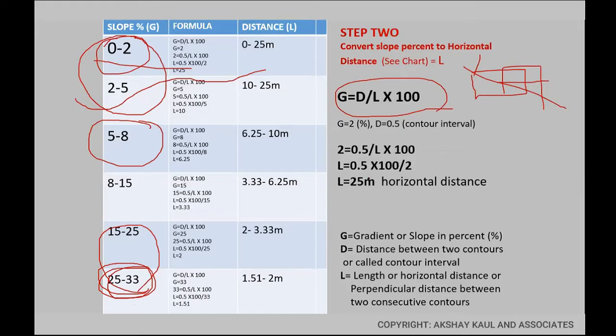So here is the formula where G stands for the gradient or the slope in percentage, D stands for the contour interval or the distance, L is what we need to find out. Because it is in percentage, so it's multiplied by 100. So 0 percent you can't get, so 0 to 2 percent—how much is 2? So the slope here is 2 percent, contour interval in this particular case is 0.5 upon L, then multiplied by this. This L is then equal to 25 meters for 2 percent slope in this case.